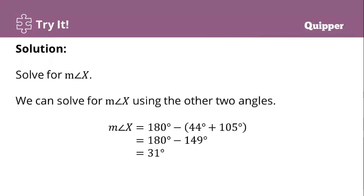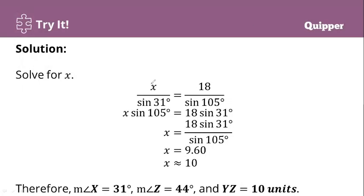After that, since we now have the value of Z, we can now solve for the value of X using the sum of the interior angles. That is 180 minus 149, our value of X is 31. From there, we can now solve for side x. We'll do the same process. That's x sine 105 degrees equals 18 sine 31 degrees. Then we divide. To find x, our value for x is approximately 10 units. Therefore, the measure of angle X is 31 degrees, angle Z is 44 degrees, and YZ is 10 units.